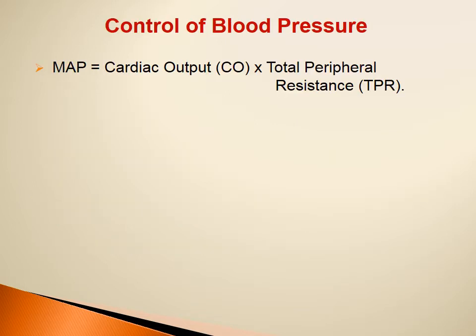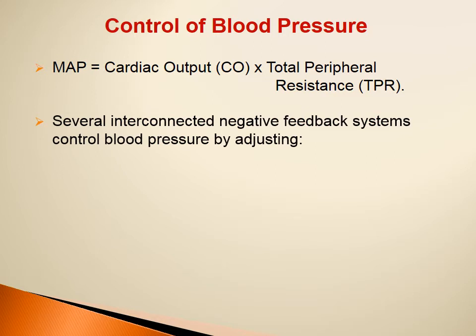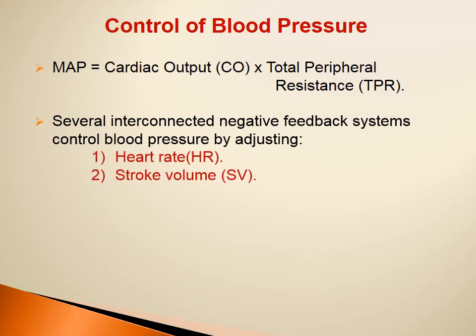As we already know from the previous lecture, mean arterial pressure can be estimated either by adding one-third of the pulse pressure to the diastolic blood pressure, or by multiplying the cardiac output by the total peripheral resistance. Several interconnected negative feedback systems control blood pressure by adjusting the heart rate and the stroke volume, because cardiac output is the product of heart rate and stroke volume.